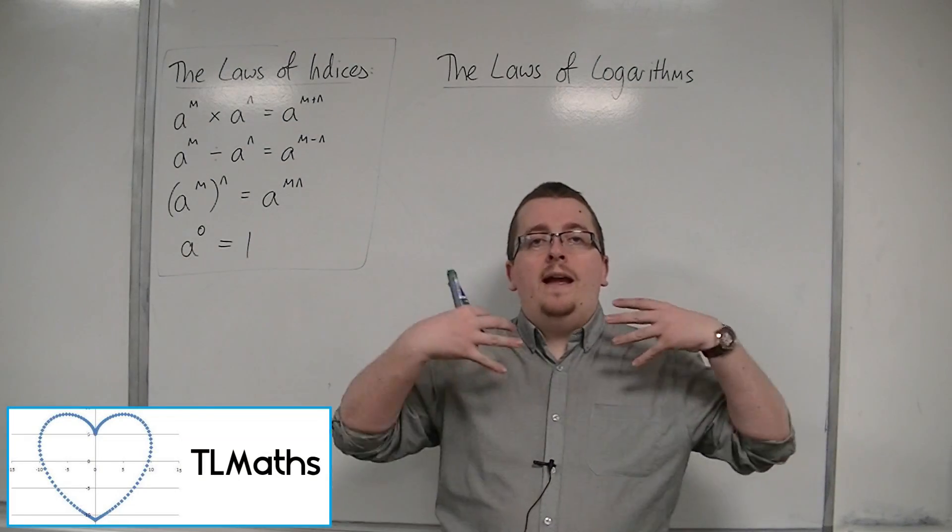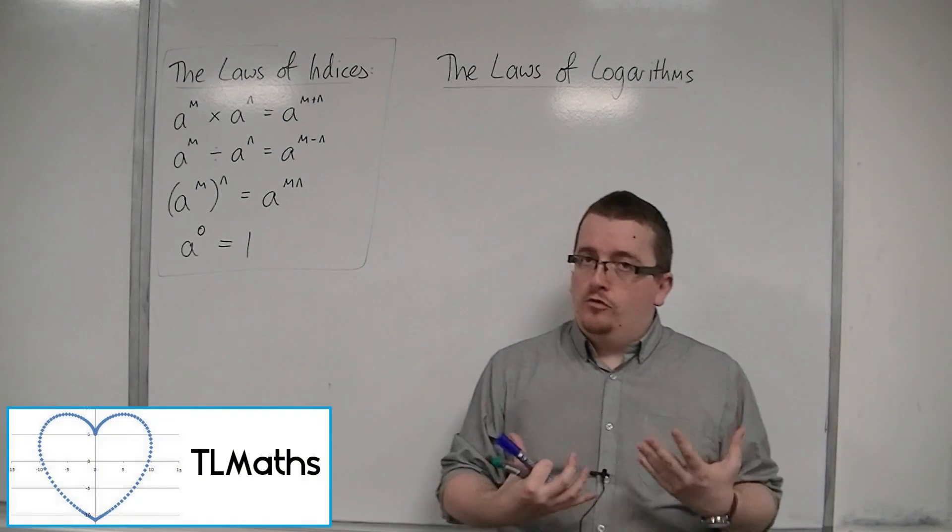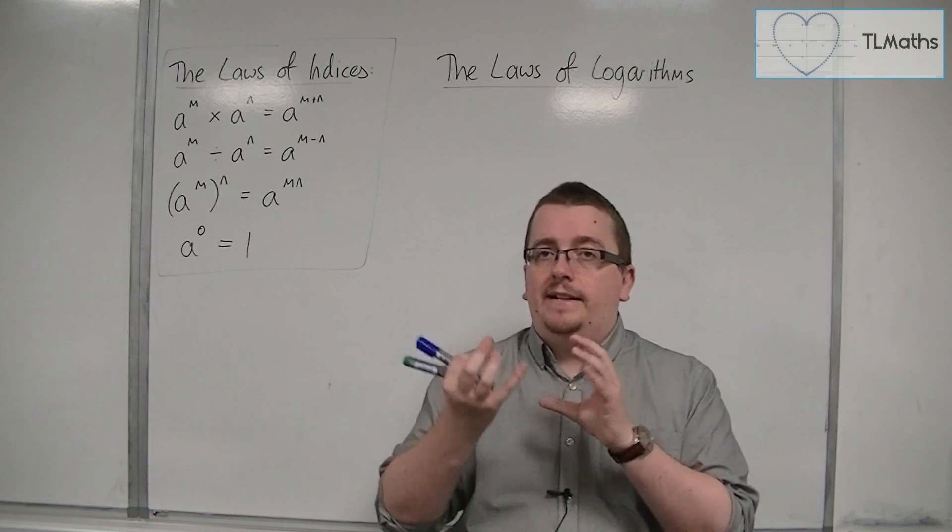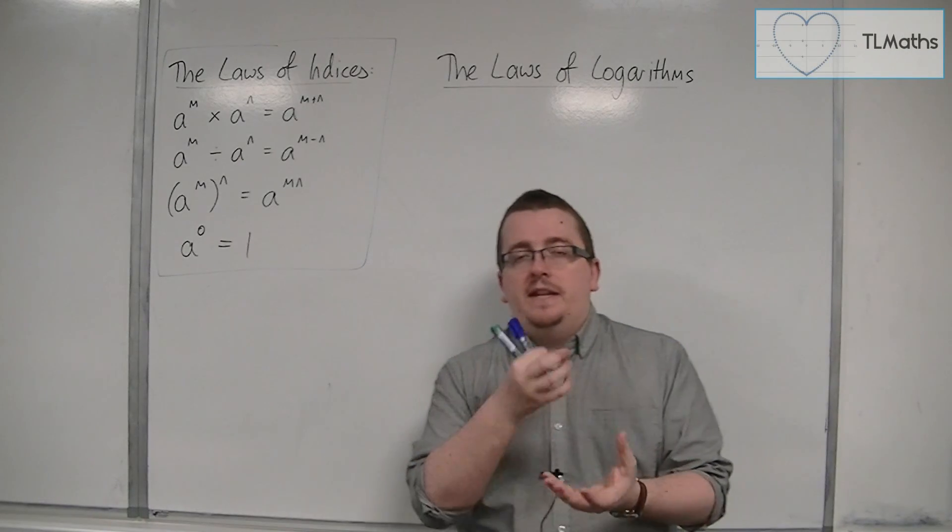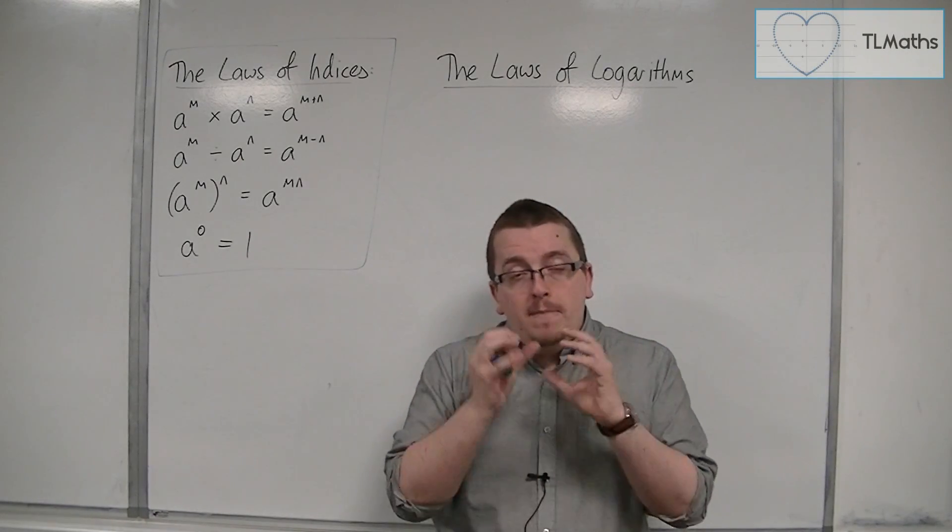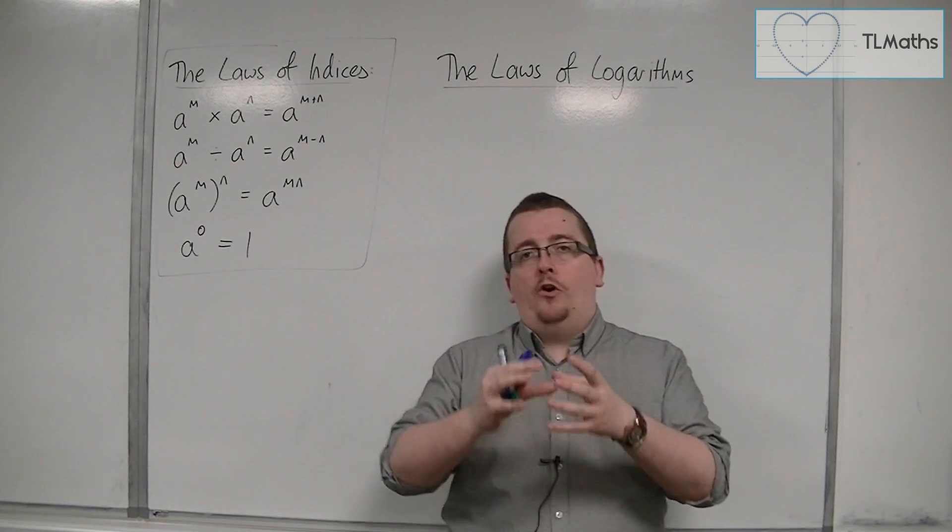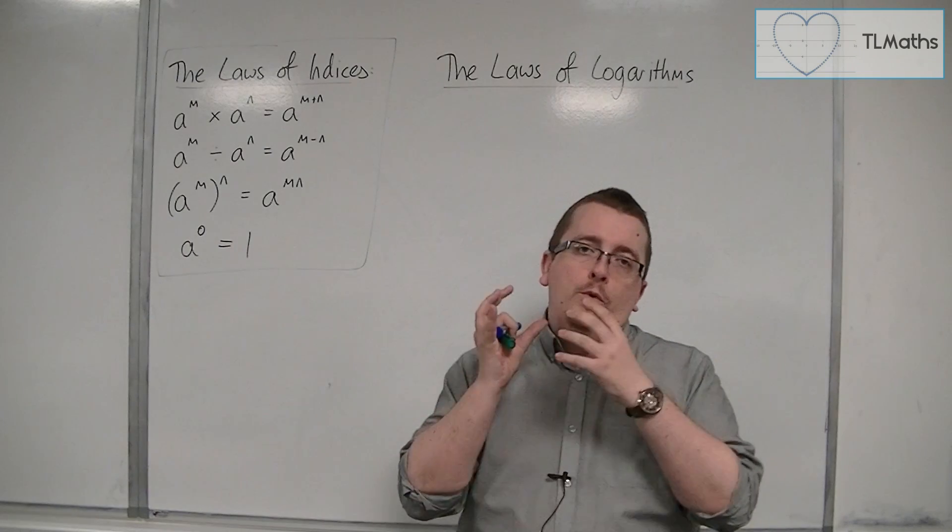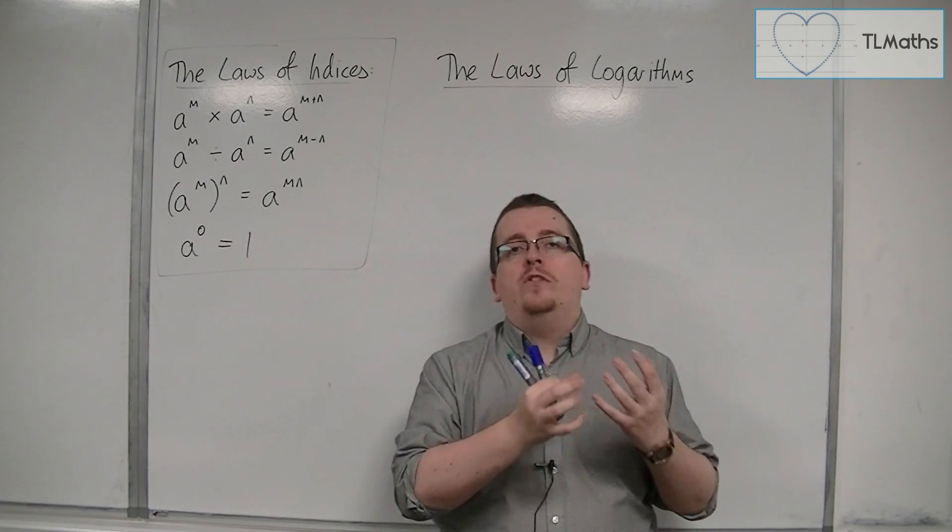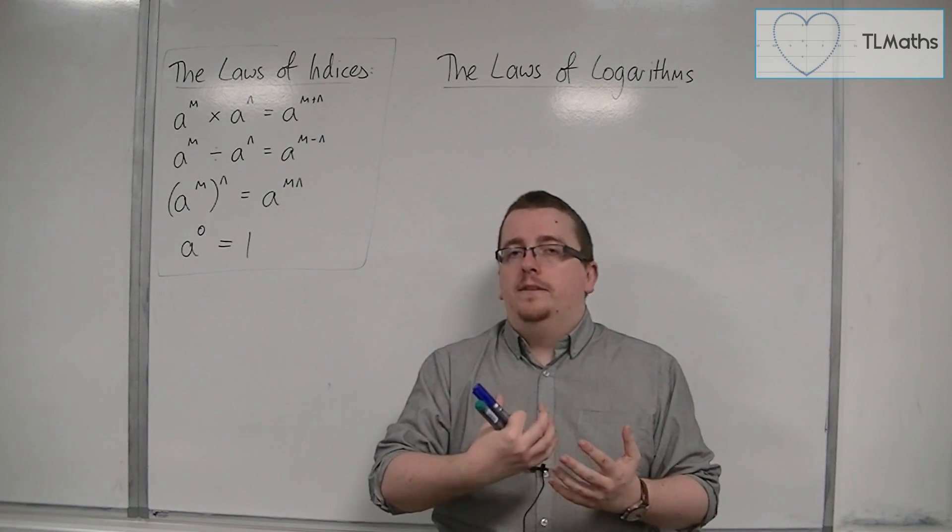We've seen how exponential form and logarithmic form are intrinsically linked. One can be converted into the other. It makes sense then that as we have the laws of indices, there would also be laws of logarithms and ways to combine them.